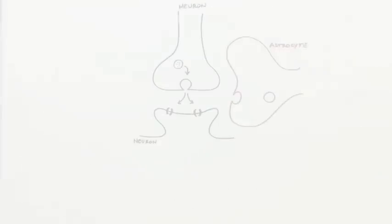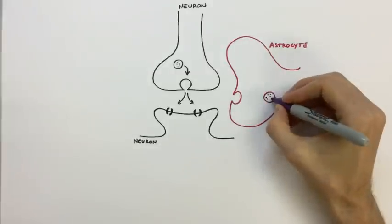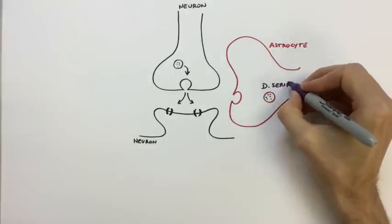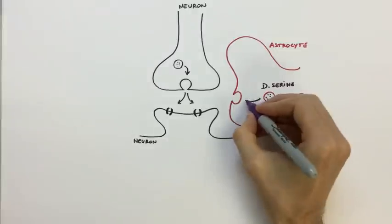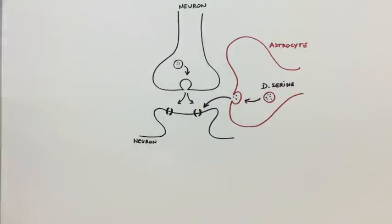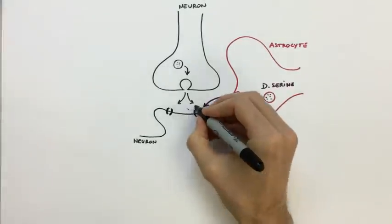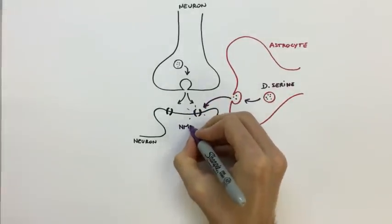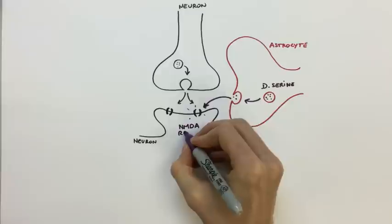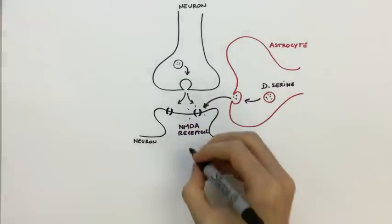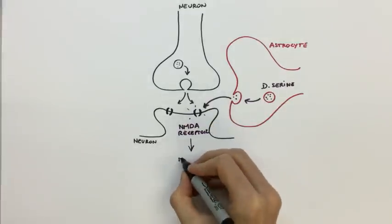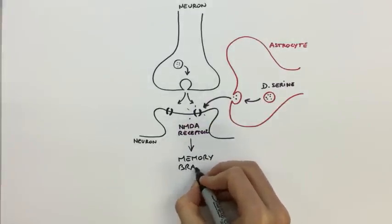We cannot study every single gliotransmitter that astrocytes release all at once, so we focus on d-serine. D-serine is a small molecule released by astrocytes that is necessary for the activity of a receptor called the NMDA receptor. This receptor is crucial in determining the strength of the synapse, and thus the connectivity between neurons — that's why d-serine is important for learning.